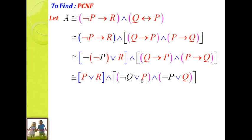Step number 2: remove negation before any sum or product term using double negation law or De Morgan's law. Here there is no negation term before sum and product, so this step is not needed. Step number 3: apply distributive law until we get PCNF or PDNF. What is PCNF? It is the product of max terms only — the AND operator is outside and each inner term is a max term connected by OR. Each max term for this three-variable problem should contain all three variables P, Q, R or their negations.